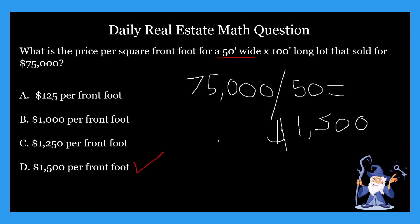What does this all mean? Let me break this down one more time. When doing these price per front foot problems, you have to look at this 50 wide by 100 long. One of those numbers is going to be the front feet, which is what we need to find. Once you get the front feet, you divide what the property sold for by the front feet. When a lot is described, the front feet are always given first — so you're never really going to have to use that 100, or the second number.